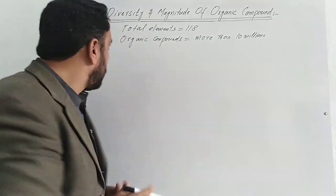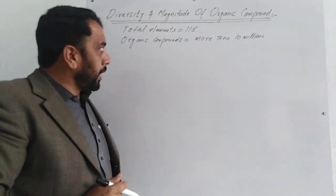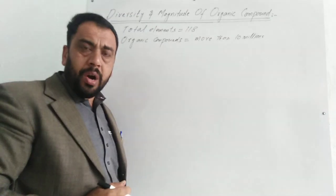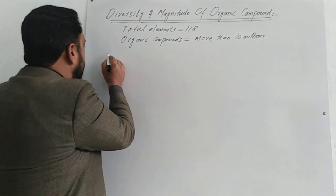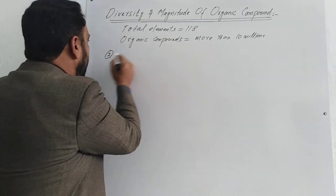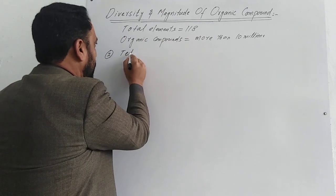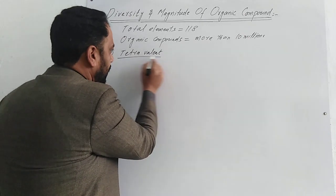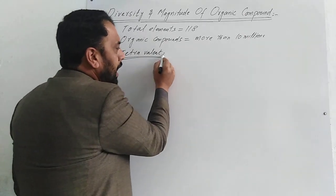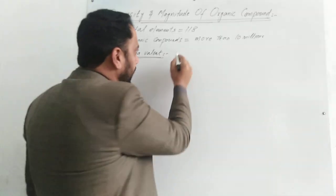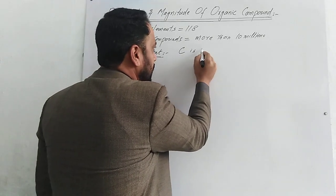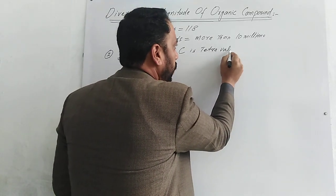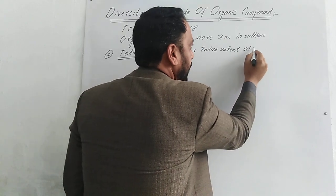So, the diversity and magnitude of organic compounds is due to multiple reasons. First, tetravalent nature. As we know that carbon is a tetravalent atom.